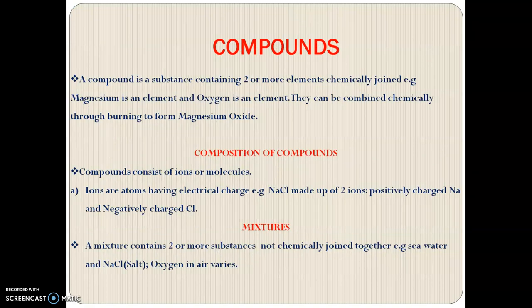Water compounds. A compound is a substance containing two or more elements chemically joined. For example, magnesium is an element and oxygen is an element. When these two are burned together and chemically combined through burning, they form magnesium oxide. So magnesium oxide is an example of a compound. Compounds consist of ions or molecules.